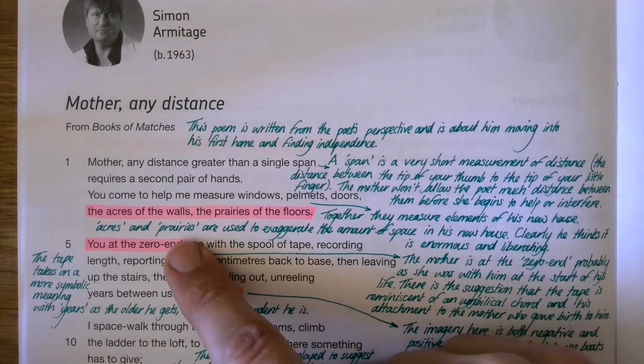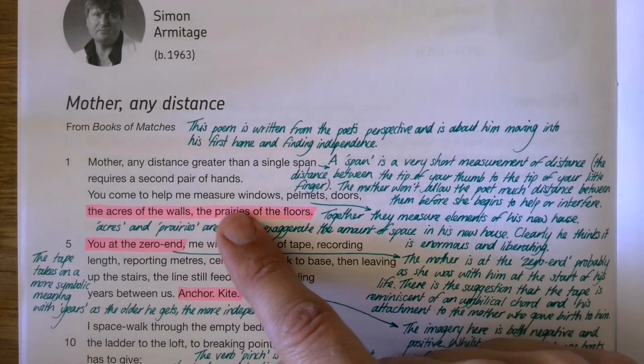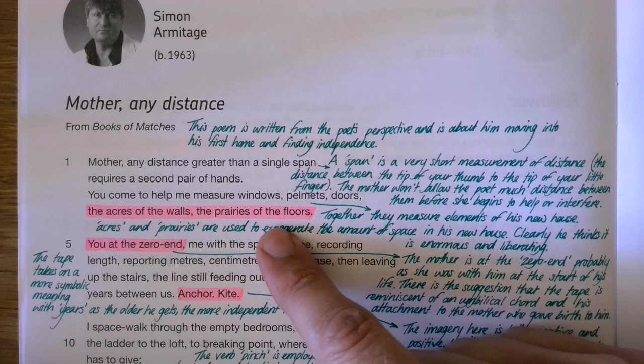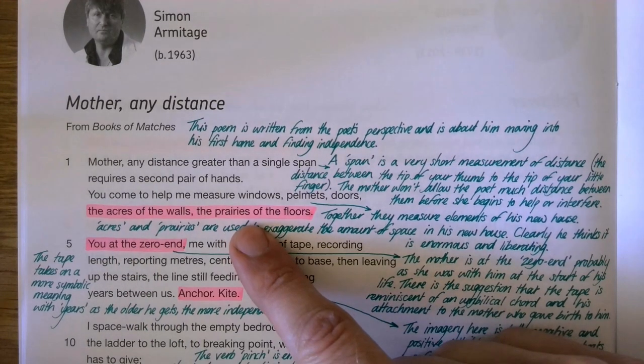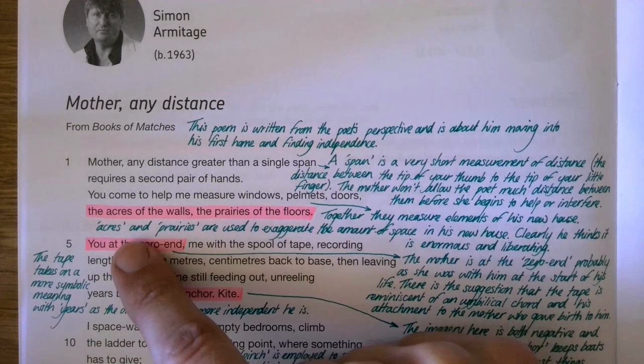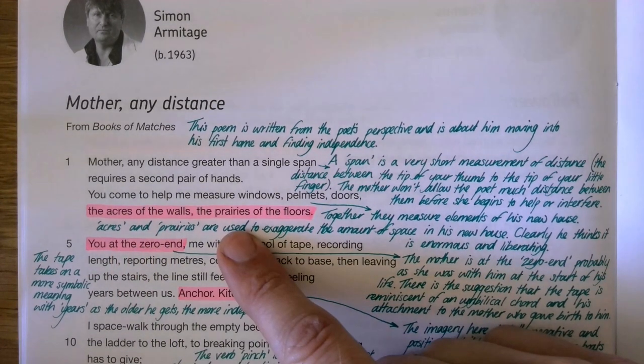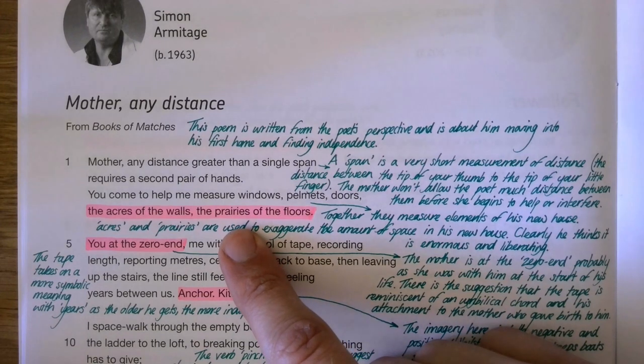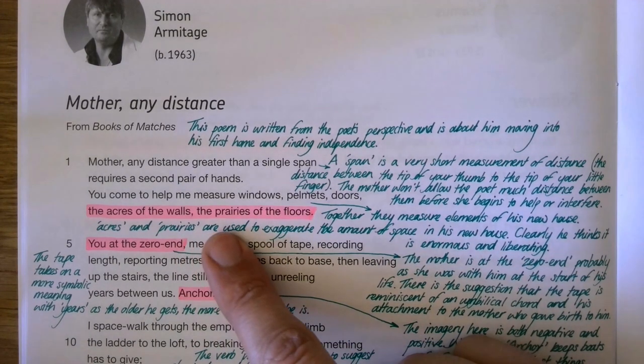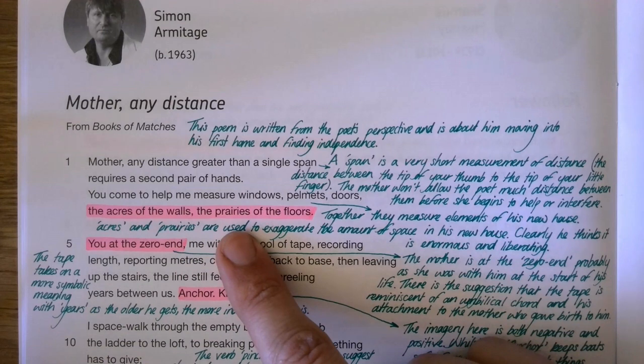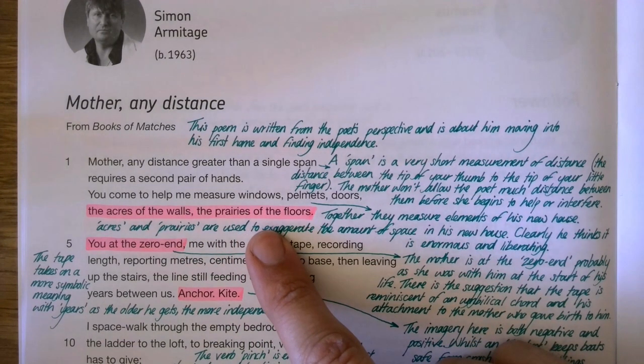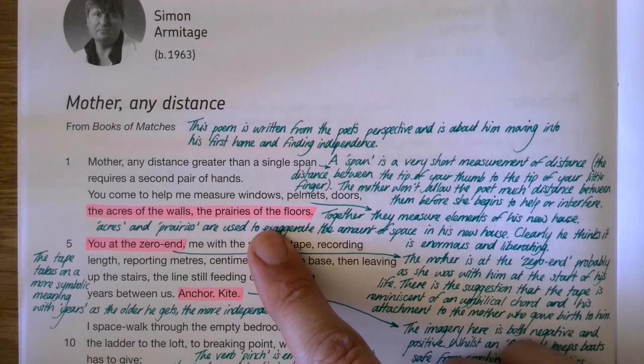He goes on to say: you come to help me measure windows, palmets, doors, the acres of the walls, the prairies of the floors. The imagery here of the acres of the walls and prairies of the floors suggests a great amount of space. These great big open wild fields suggest his new home feels like he's got masses of space, so maybe he's using this to exaggerate the amount of space in his new house compared to his previous living conditions where he maybe felt more stifled living at home with his parents.